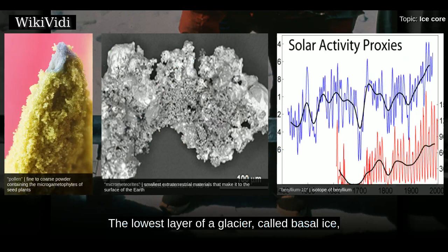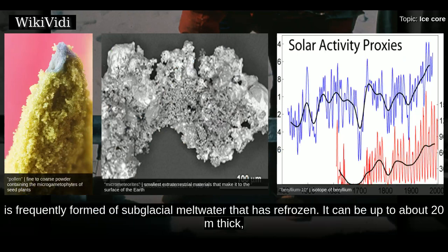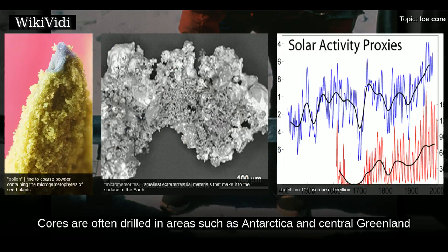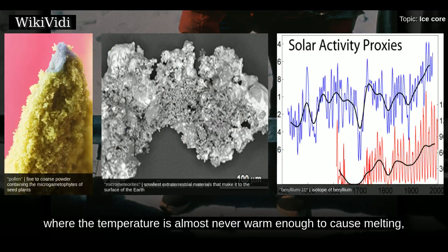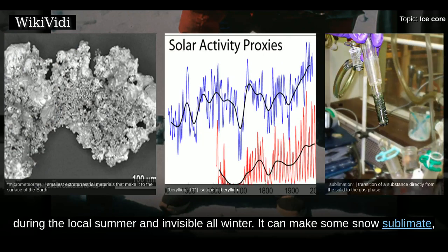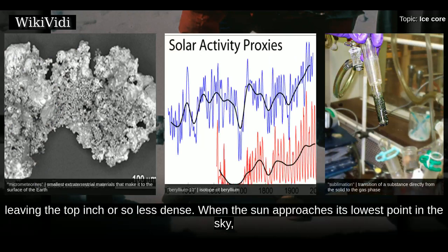The lowest layer of a glacier, called basal ice, is frequently formed of subglacial meltwater that has refrozen. It can be up to about 20 meters thick, and though it has scientific value, it often does not retain stratigraphic information. Cores are often drilled in areas such as Antarctica and central Greenland, where the temperature is almost never warm enough to cause melting, but the summer sun can still alter the snow. In polar areas, the sun is visible day and night during the local summer, and it can make some snow sublimate, leaving the top inches less dense.